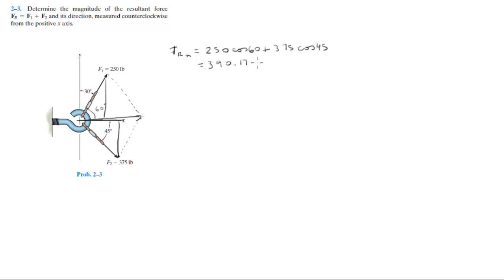The y-component of the resultant force in the same fashion is 250 sine of 60 plus 375 sine of 45. The y-component is equal to negative 48.66.